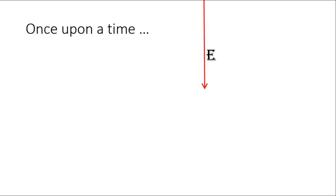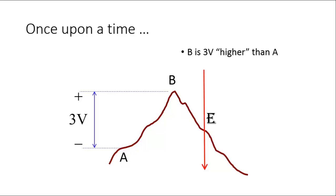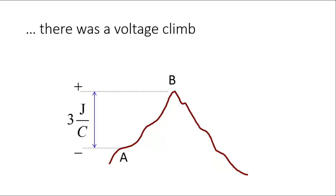It is high time that we combine those two protagonists: charge flows and electric height — that is, to combine currents and voltages. Consider an electric field E. Inside that field, imagine there is a hypothetical mountain on which there are two points A and B, and B is 3 volts — that is, 3 joules per coulomb — higher than A.